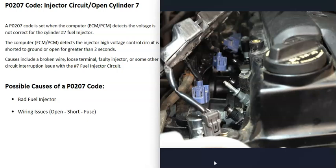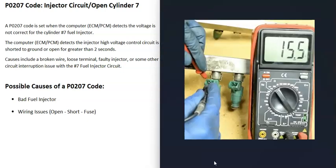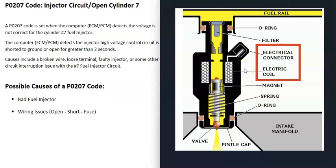Wiring issues include an open, a short, a blown fuse, or something along those lines. How these fuel injectors work is there's a coil inside, and when voltage goes to it, it energizes and pulls up on a magnet, which lets fuel go into the cylinder.